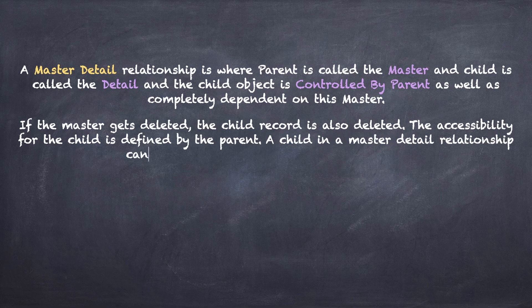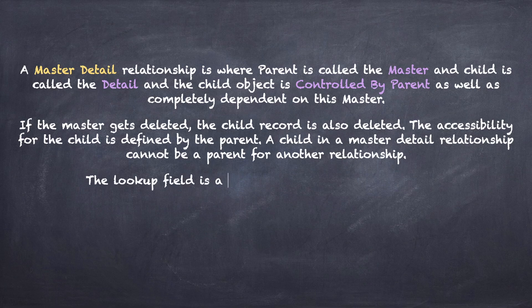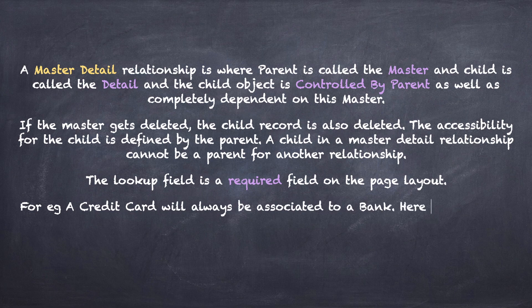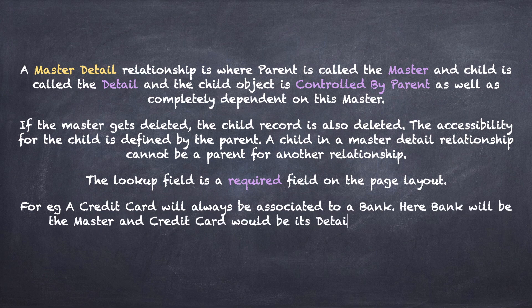A child in a master detail relationship cannot be a parent for another relationship. The lookup field is a required field on the page layout. For example, a credit card will always be associated to a bank — here the bank will be the master and the credit card would be the detail in a master detail relationship.